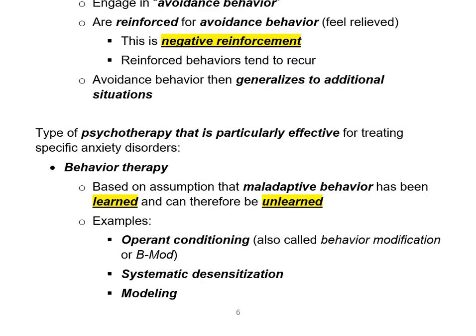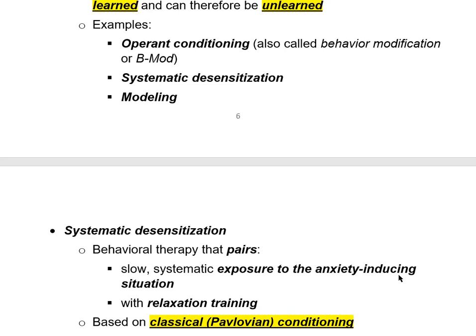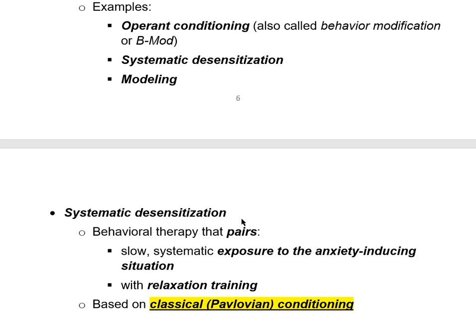Ettinger talks about all of these approaches. I want to do a deep dive on systematic desensitization. It is a behavioral therapy and basically a real-world application of classical conditioning — Pavlovian conditioning. Systematic desensitization is a behavioral therapy that pairs slow, systematic exposure to the anxiety-inducing situation with relaxation training. Classical conditioning is all about pairing one stimulus with another stimulus, and that's what systematic desensitization is about.